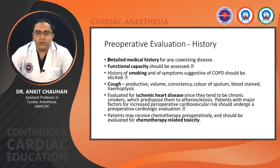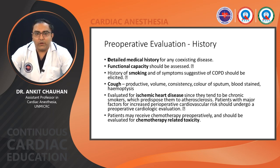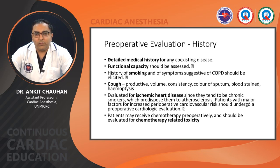Preoperative evaluation — starting with history: we must obtain a detailed medical history of any coexisting disease, assess functional capacity, and note any history of smoking and symptoms suggestive of COPD. For cough, assess whether it is productive or non-productive, its volume, consistency, color of sputum, blood staining, and any hemoptysis. These patients should also be evaluated for systemic heart disease, as chronic smoking predisposes them to atherosclerosis. Patients with major risk factors for perioperative cardiovascular risk should undergo preoperative cardiology evaluation, and those who received chemotherapy preoperatively should be assessed for chemotherapy-related toxicity.